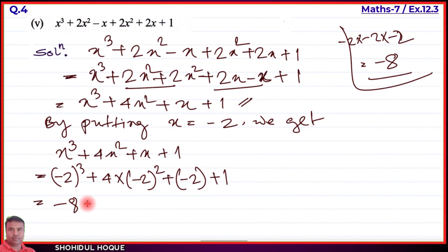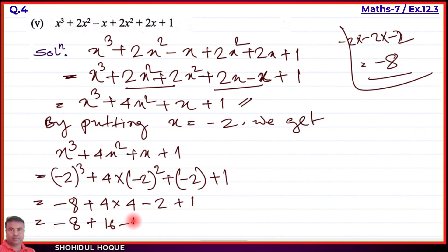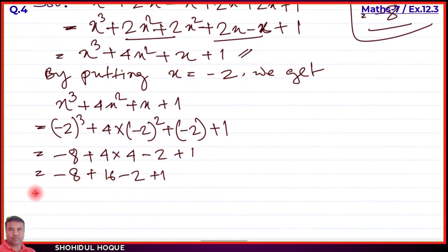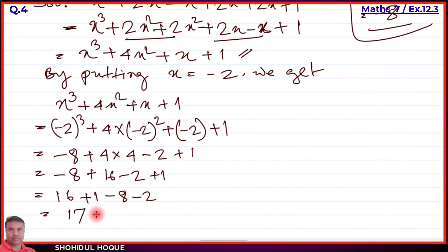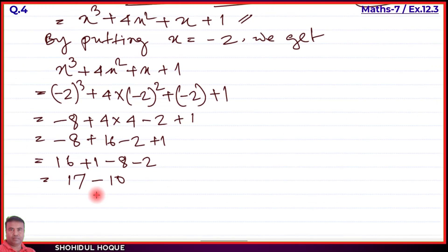So: minus 8, plus 4 into (minus 2) squared — minus 2 squared is positive 4, so 4 times 4 equals 16. Then plus minus 2, plus 1. Arranging: positives are 16 and 1, sum is 17. Negatives are minus 8 and minus 2, sum is minus 10. So 17 minus 10 equals 7. The answer is 7.